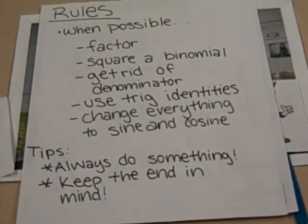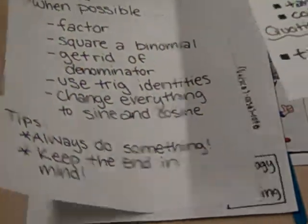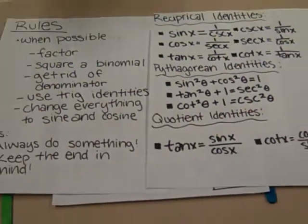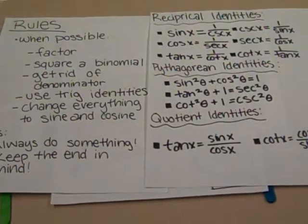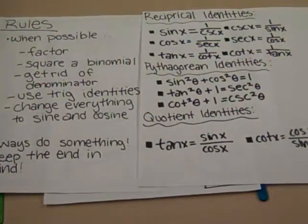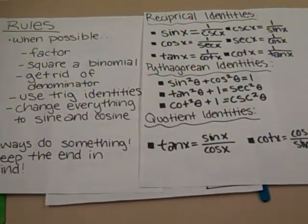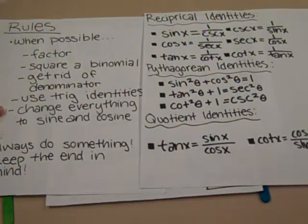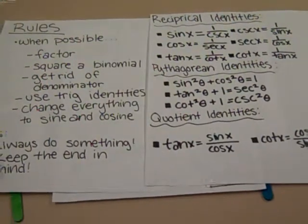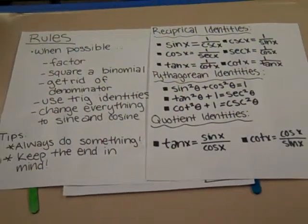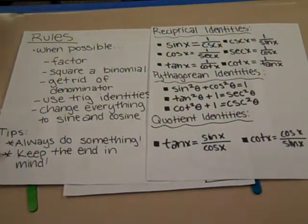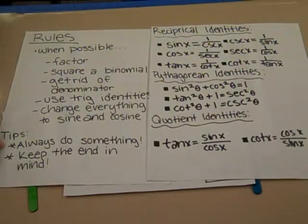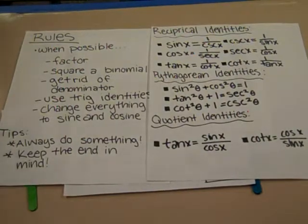Here are some trig identities you might need. If you're not sure where to go, try going down streets that are all sines and cosines. A tip for you though: always remember where you are trying to go, and always pick a street. Even if you reach a dead end, at least you won't be in the same spot.